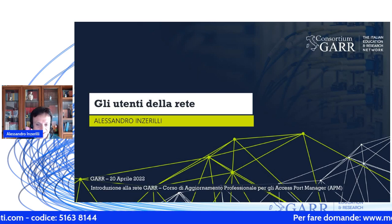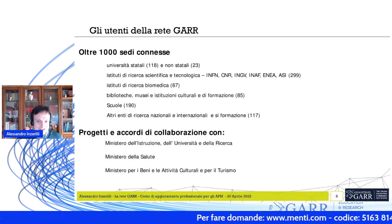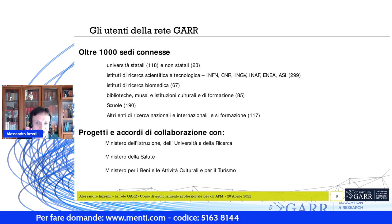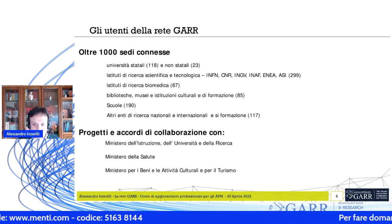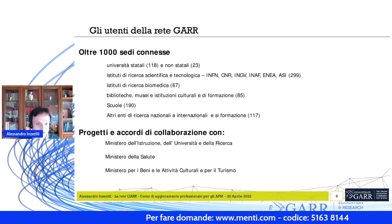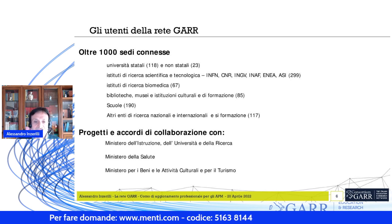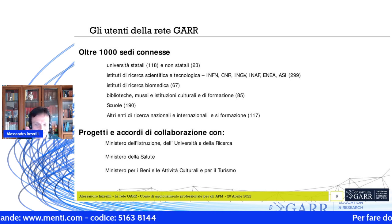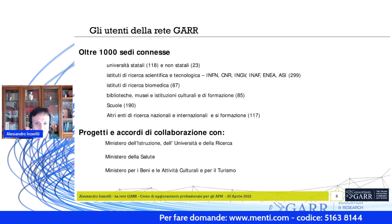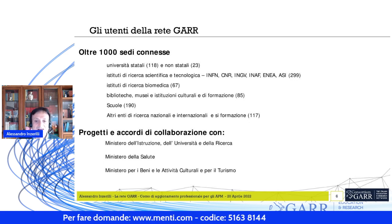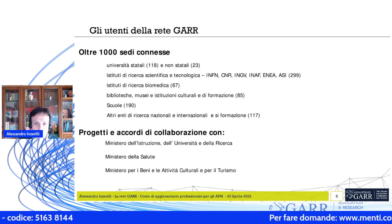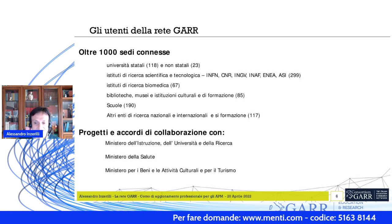Gli utenti della rete GAR: attualmente ci sono più di mille sedi collegate. Le tipologie di enti interconnessi comprendono le università statali e non statali, tutti gli istituti di ricerca scientifica e tecnologica — INFN, CNR, Istituto di Geofisica e Vulcanologia, INAF, ENEA, ASI — che costituiscono circa 300 sedi, il cosiddetto core degli enti collegati alla rete.